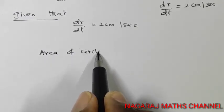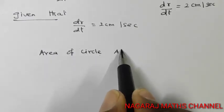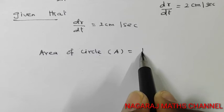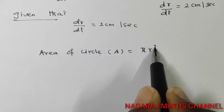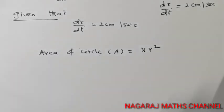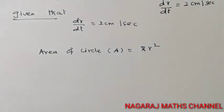The area of a circle is A = pi r squared.